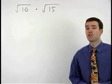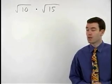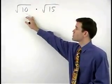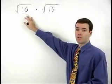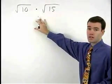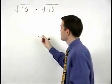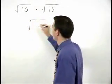To multiply two square roots together, simply multiply the numbers inside the square roots together. So root 10 times root 15 is root 150.